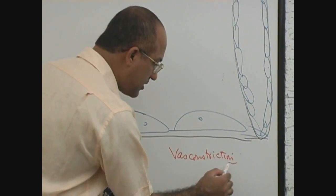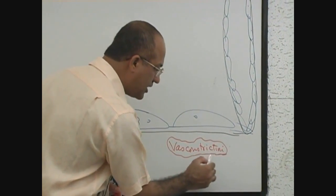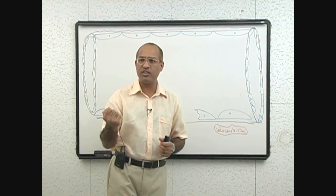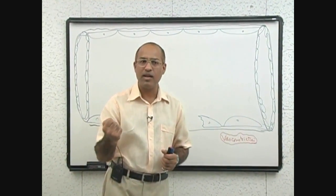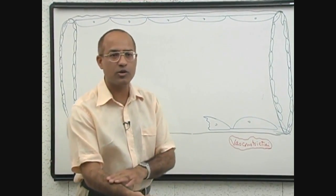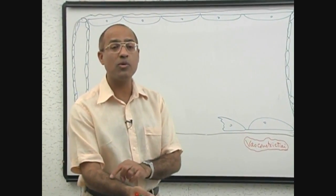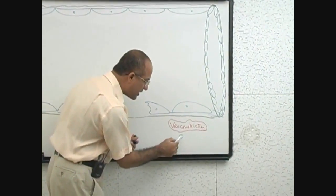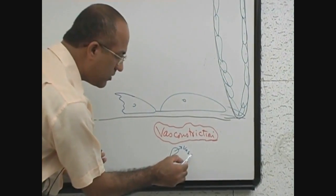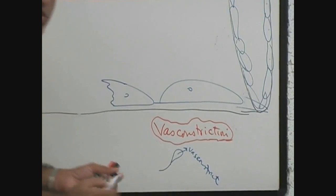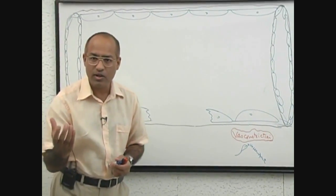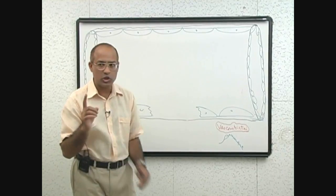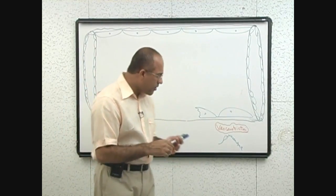Vasoconstriction. It is a very early response to injury but it is for very short time. Vessels undergo constriction. How do vessels undergo constriction? What is the mechanism? Number one, when blood vessels are injured, of course surrounding nerve endings are also injured. And from the surrounding nerve endings, vasoconstrictors are released. This is called neurogenic reflex vasoconstriction.